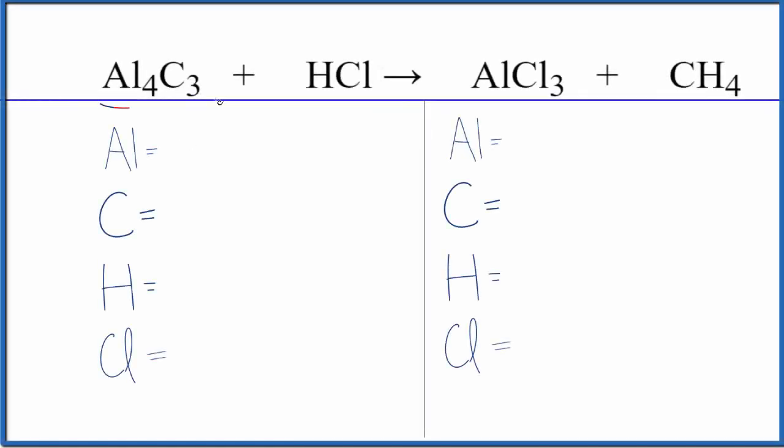Let's write the balanced equation for Al4C3 plus HCl. This is called aluminum carbide and this is hydrochloric acid. So the first thing we'll do is count the atoms up on each side.